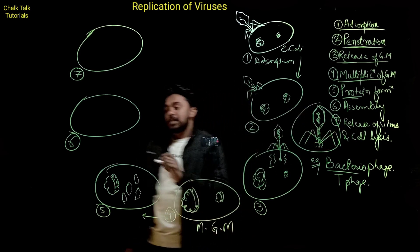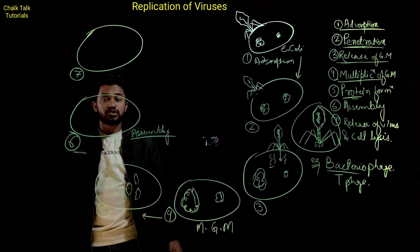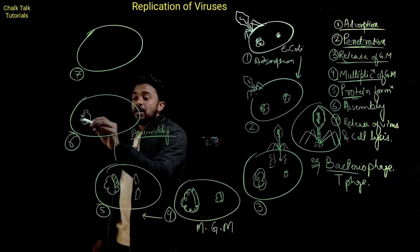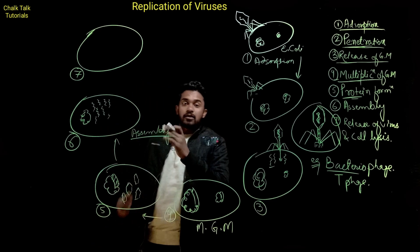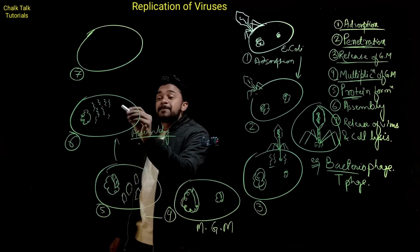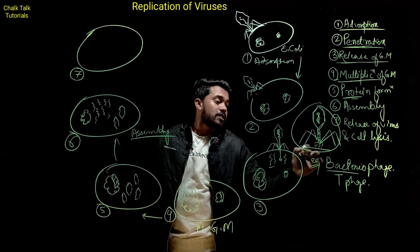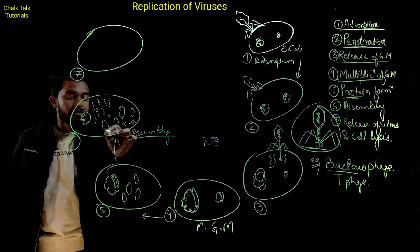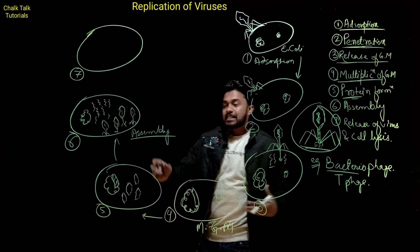उसके बाद छठा step है assembly। Assembly का मतलब होता है जुड़ना। जो bacteria का एक DNA था, वो divide हो गया था, एक DNA से बहुत सारी copies बन गई थीं। इसमें protein भी बन गए थे — head और virus के सभी parts। तो यह सब जुड़ेंगे, जुड़ के वैसा structure बना लेंगे जैसा bacteriophage था। यह हो गया assembly।